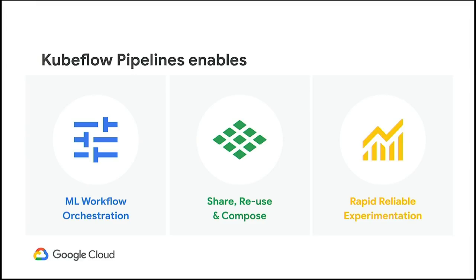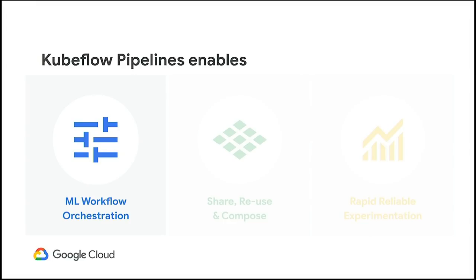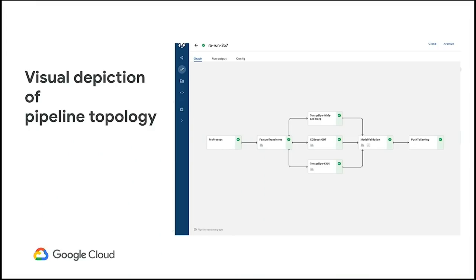The capabilities provided by Kubeflow Pipelines can largely be put under three buckets: machine learning workflow orchestration, sharing reusability and easy composability, and rapid reliable experimentation. To make things more concrete, let's look at a screenshot of a workflow that was run with Kubeflow Pipelines. For any workflow you run, you get this rich visual depiction of the topology of the workflow so you can see and understand what was run.